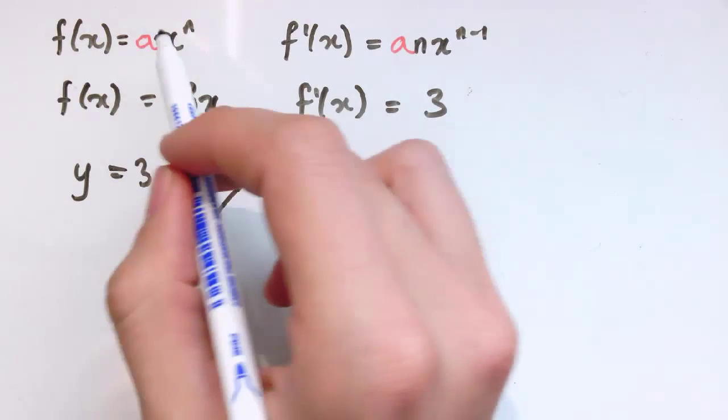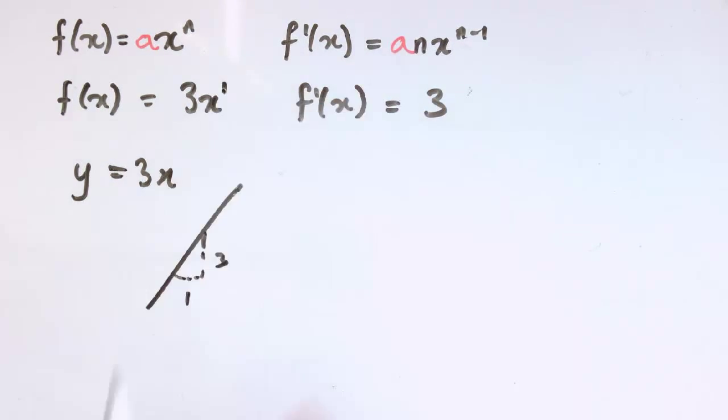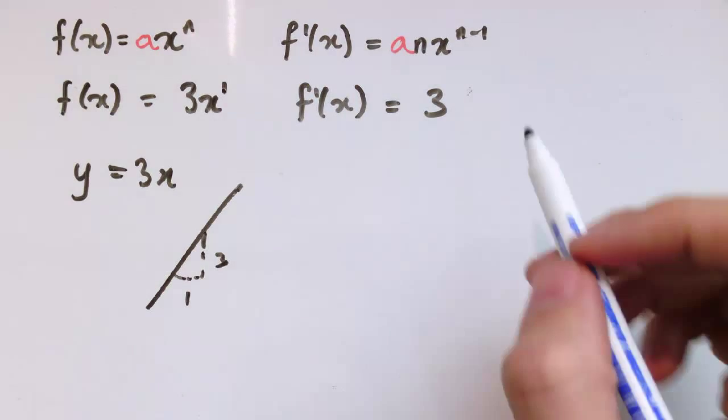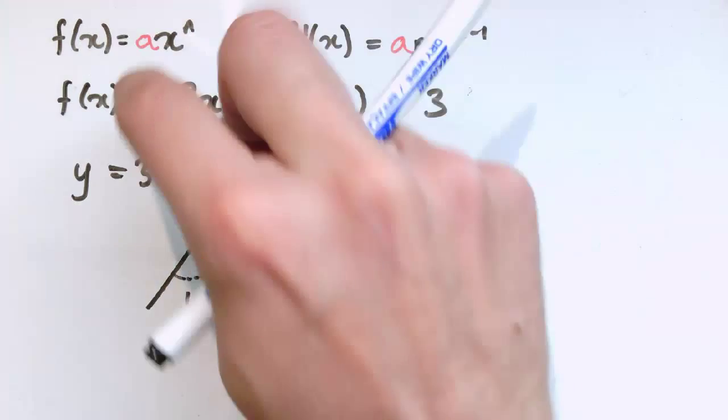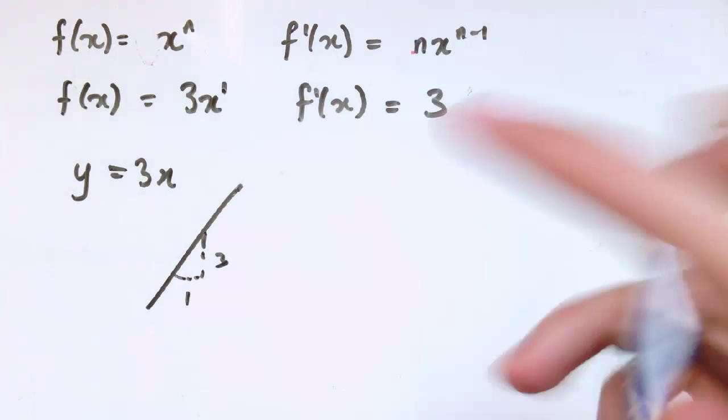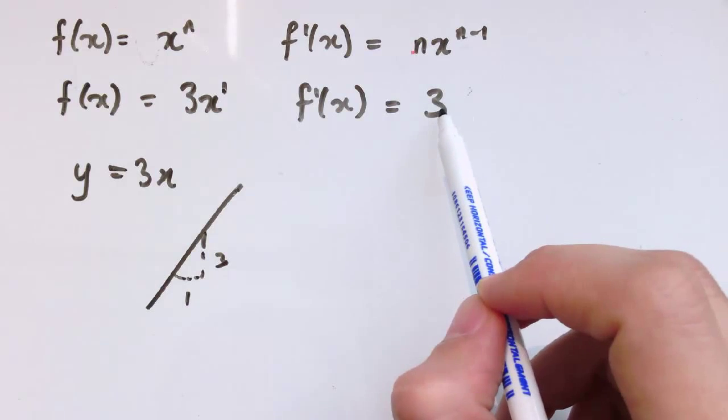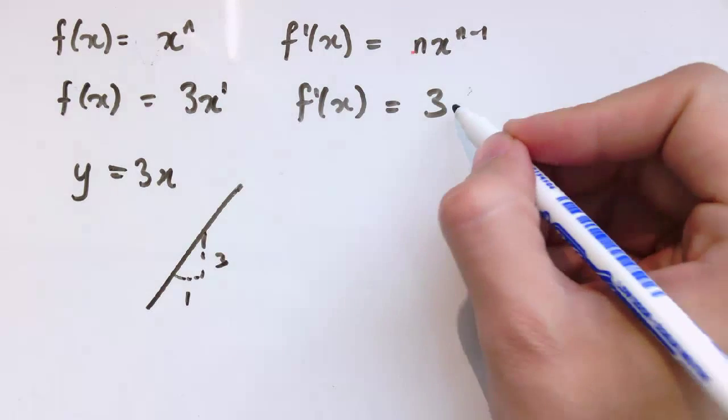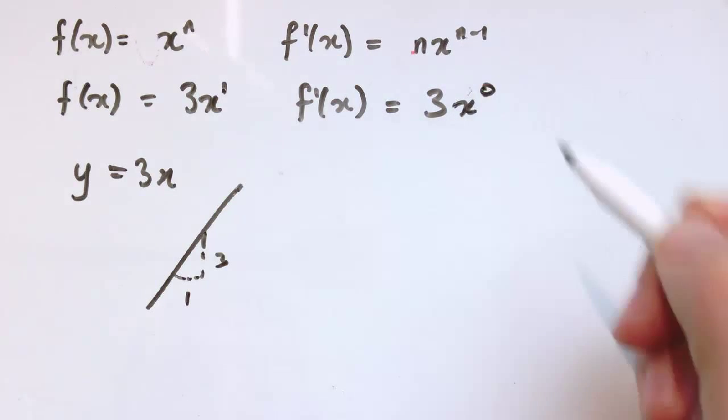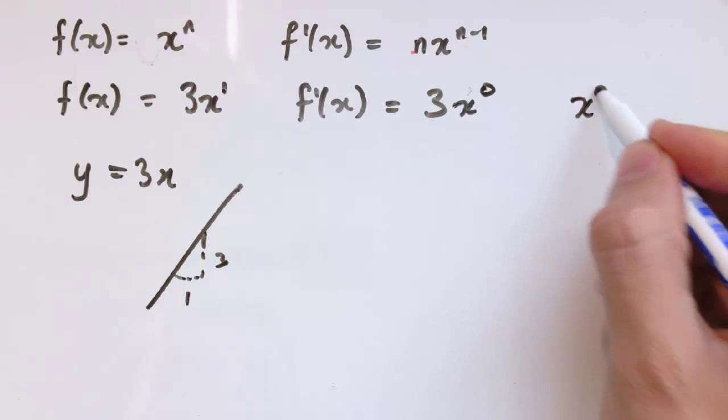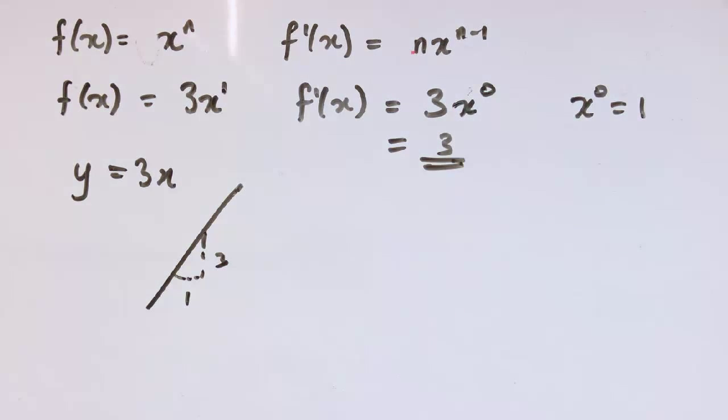But it does also fit with this rule here, because we can think of it as having n equals 1. So, it's 3 times x to the 1. And then when I plug it into this formula here, of course, a is 1 here, so we're not already using the a. We've got 3 times x to the n minus 1. And n minus 1 here is 1 minus 1, so that's 0. But, of course, x to the 0 is just 1. So, this is just 3. So, it is a special case of this formula.